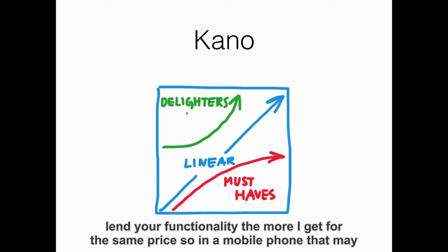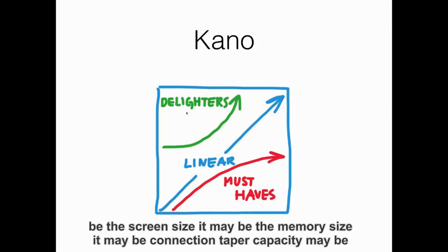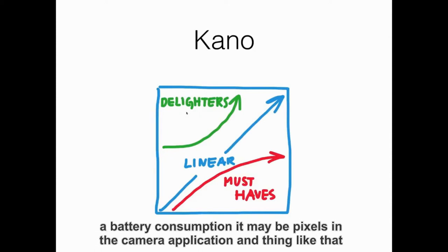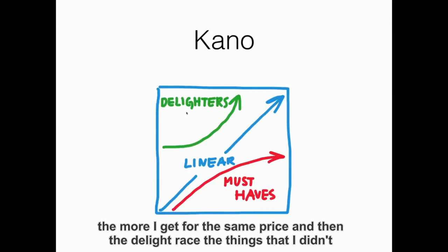Linear functionality — the more I get for the same price. In a mobile phone, that may be the screen size, it may be the memory size, it may be connection capacity, it may be battery consumption, it may be pixels in the camera application and things like that. The more I get for the same price.